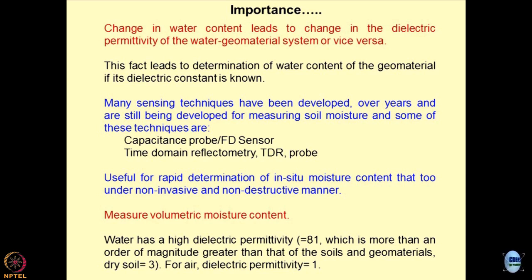I can show how the dielectric properties are changing over a period of time. Many sensing techniques are developed nowadays which use the concept of measurement of dielectric property or dielectric permittivity. Depending upon the dielectric permittivity, you can express it as a function of volumetric moisture content. Once these two are known, I can manipulate other properties of the geomaterials. Good examples of such techniques are capacitance probes and frequency domain probes — FD probes or FD sensors.